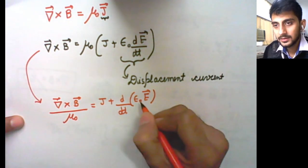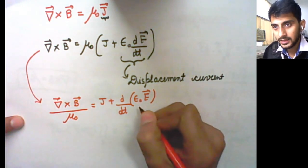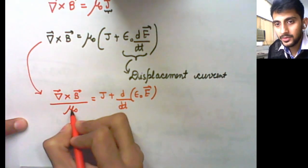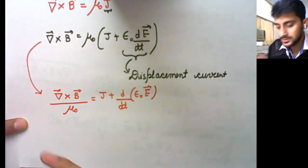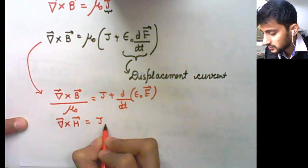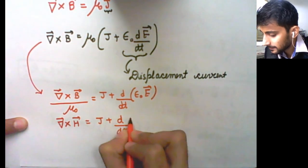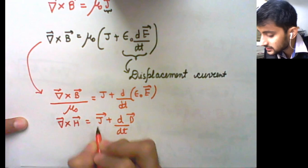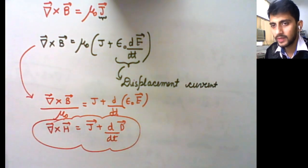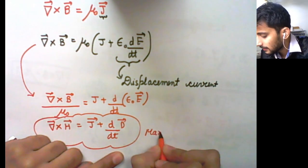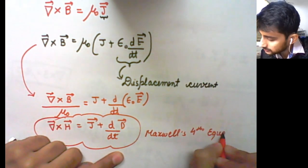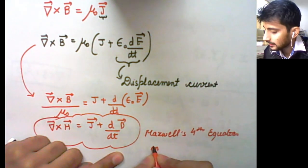If the medium is homogeneous or temporally constant, then you can take epsilon naught inside. So we get del cross H equals J plus del D by del T. Here D, J, and del D by del T are all vectors. Any form can be given to you in the exam, or you can use any form. These are all forms of Maxwell's fourth equation in differential form.